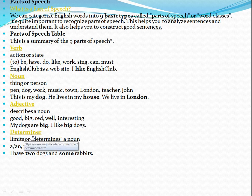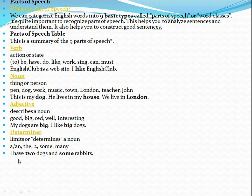Then determiners. They limit or determine a noun. Examples: a, an, the — 'the' is the definite article — two, some, many. These are all determiners. For example: 'I have two dogs and some rabbits.'